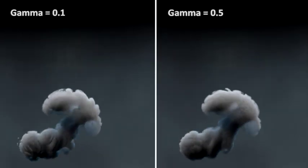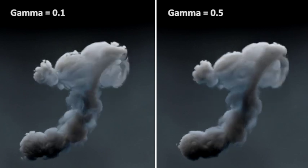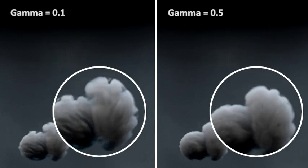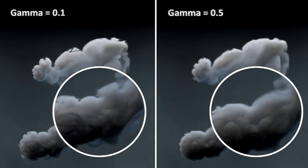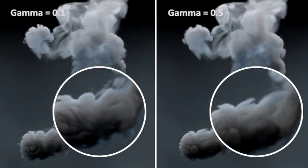Our differentiable renderer may vary the way that the styles are propagated through the smoke. From left to right, we show examples stylized with different transmittance constants. Notice how higher transmittance restricts the stylization towards the smoke surface.